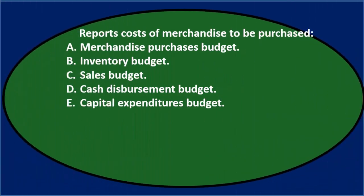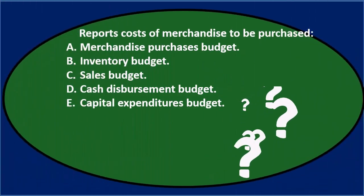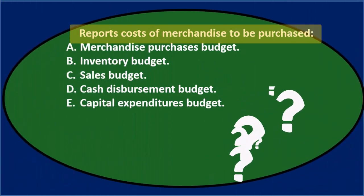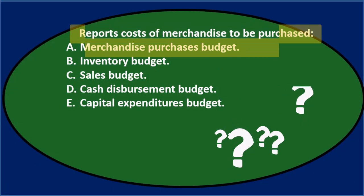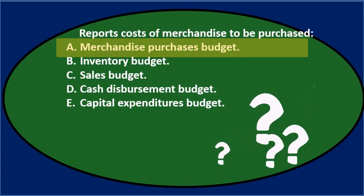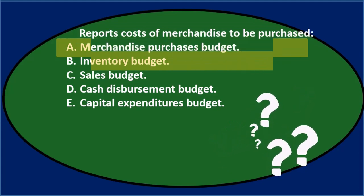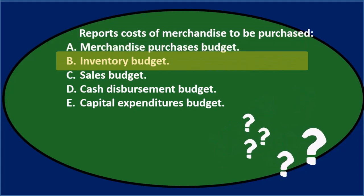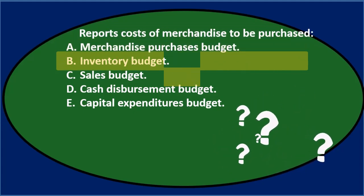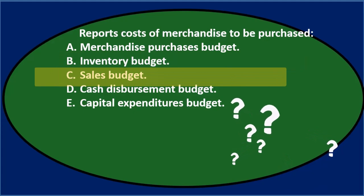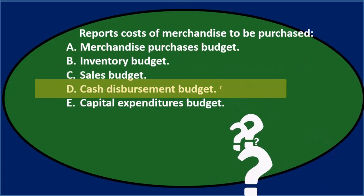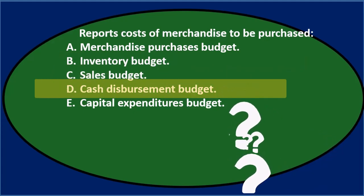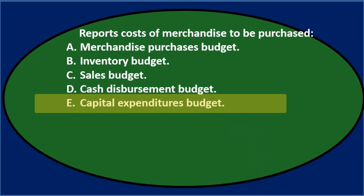First question: which budget reports costs of merchandise to be purchased? A. Merchandise Purchases Budget. B. Inventory Budget. C. Sales Budget. D. Cash Disbursement Budget. E. Capital Expenditures Budget.